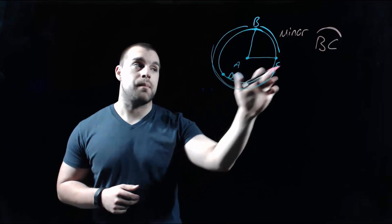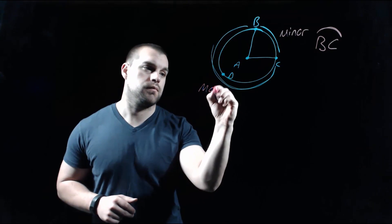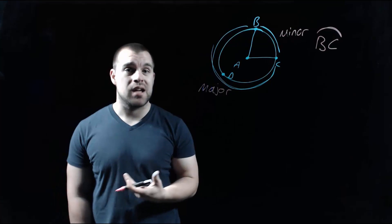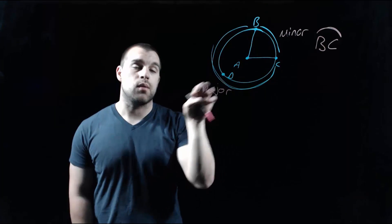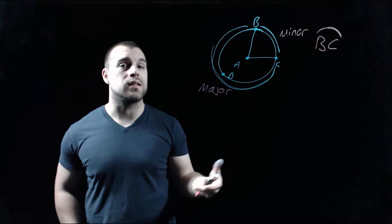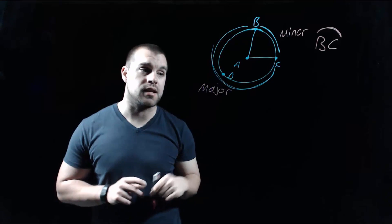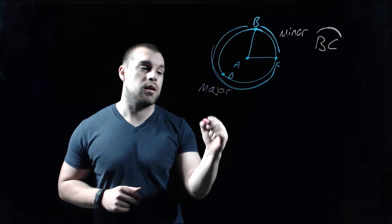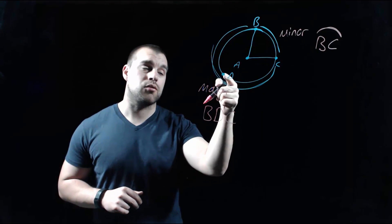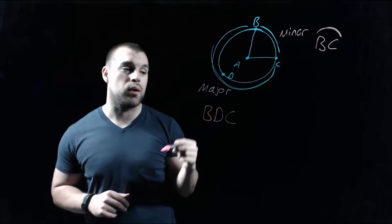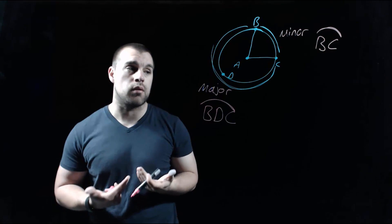The bigger piece on the bottom left-hand side is a major arc, because it's more than half the circle. When we name a major arc, there are three points that we use — the two endpoints, plus another point that tells us we're going the long way around the circle instead of just the short way from B to C. So we would name this arc BDC, because we're starting at point B, going through point D, and then hitting point C. We put an arc symbol over the top to show we're talking about an arc.